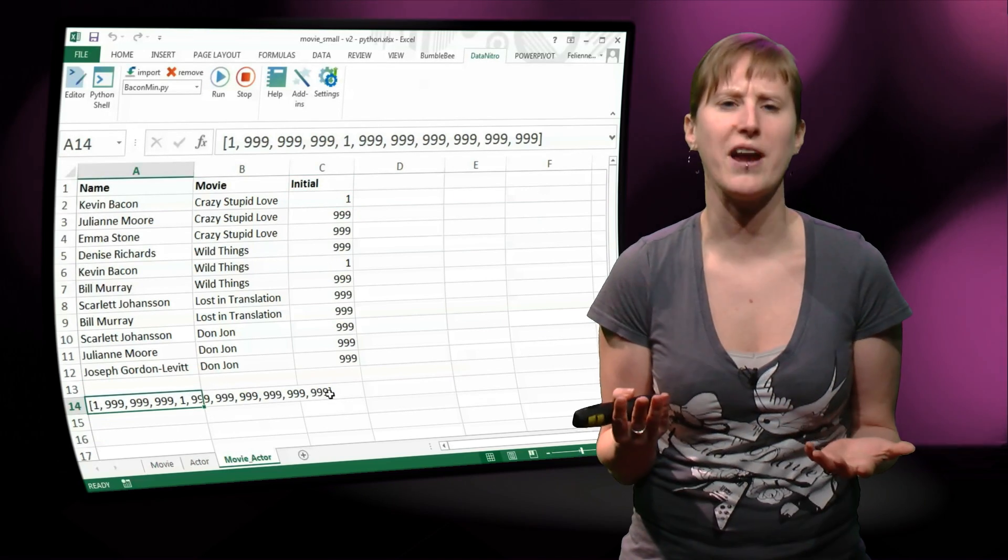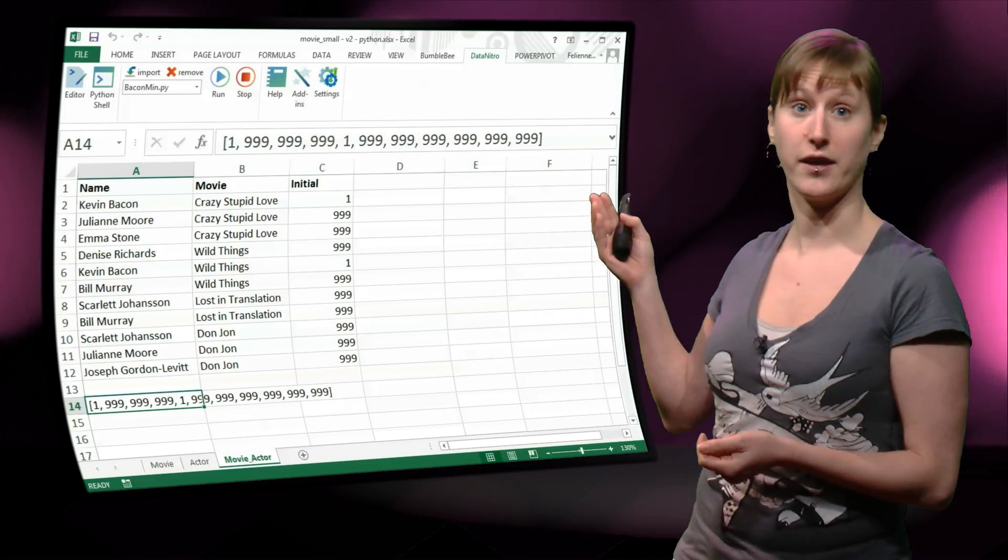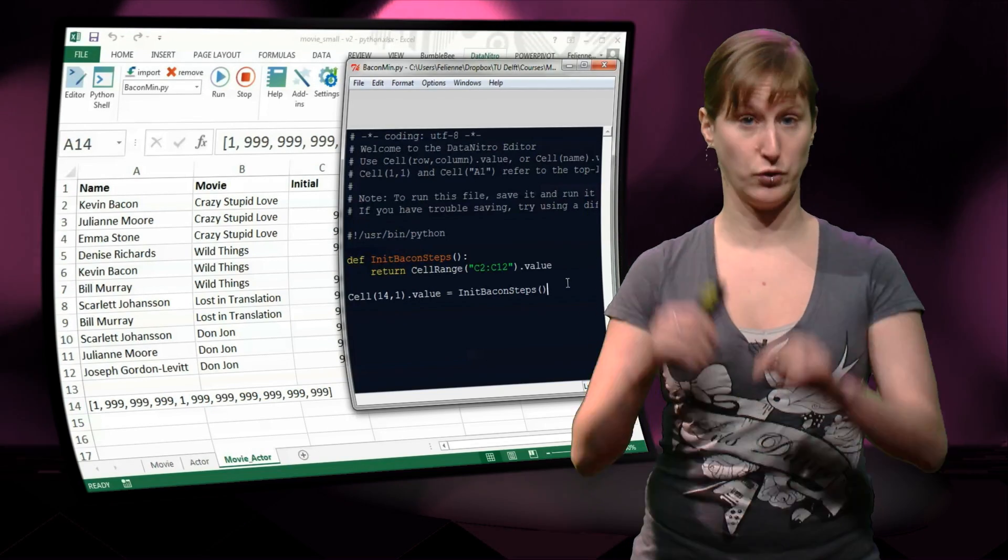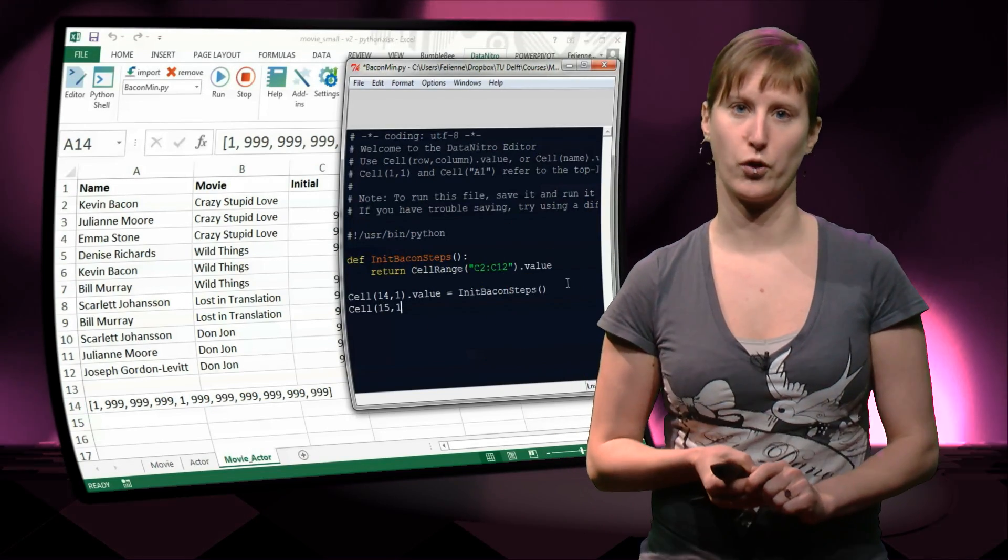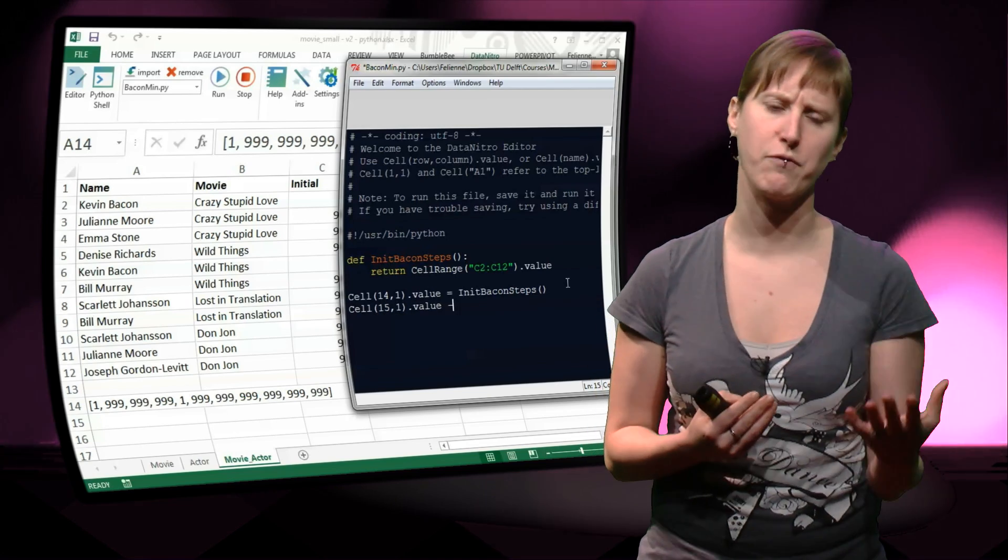And if you want to do some sort of operation on your list, like a minimum, you just have to use min and the list that you want to work on. You don't have to fiddle with array formulas.